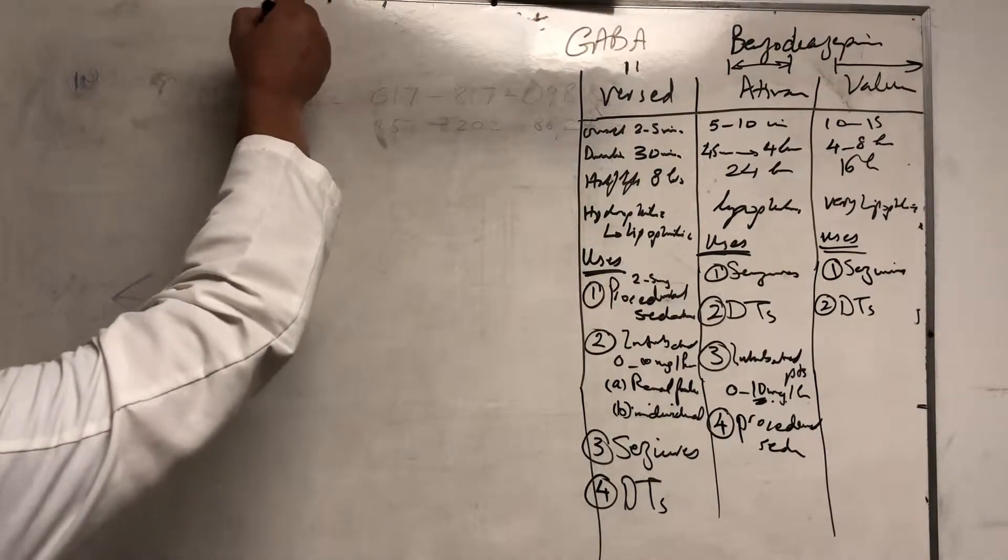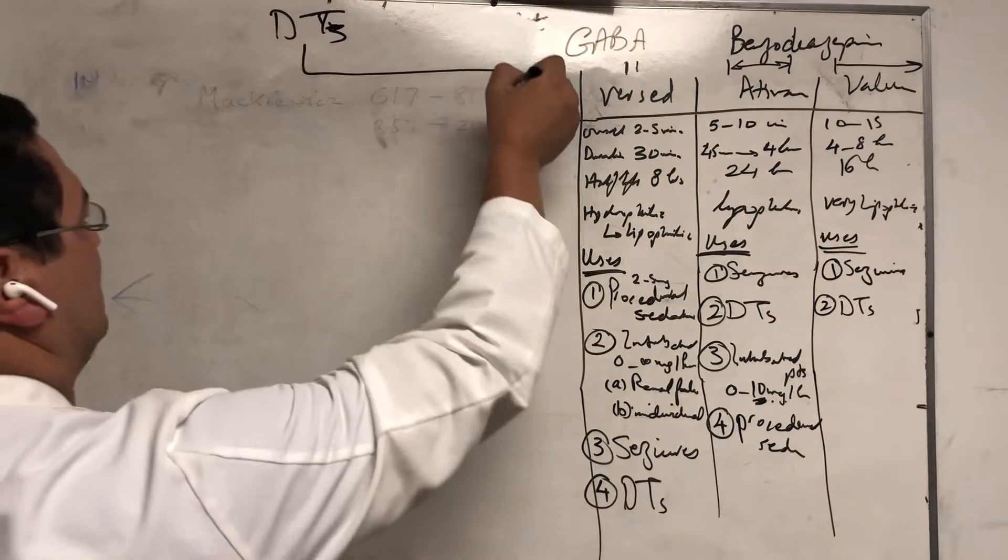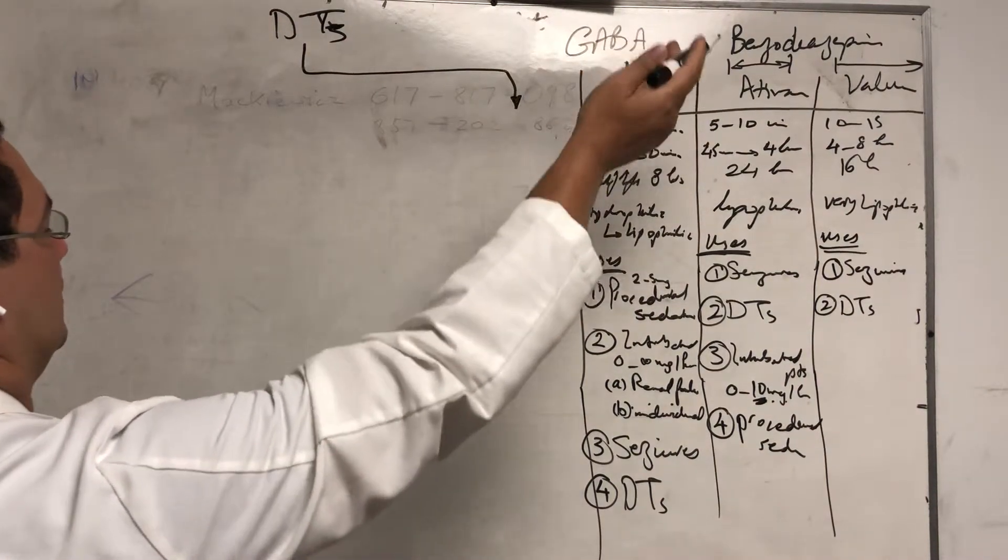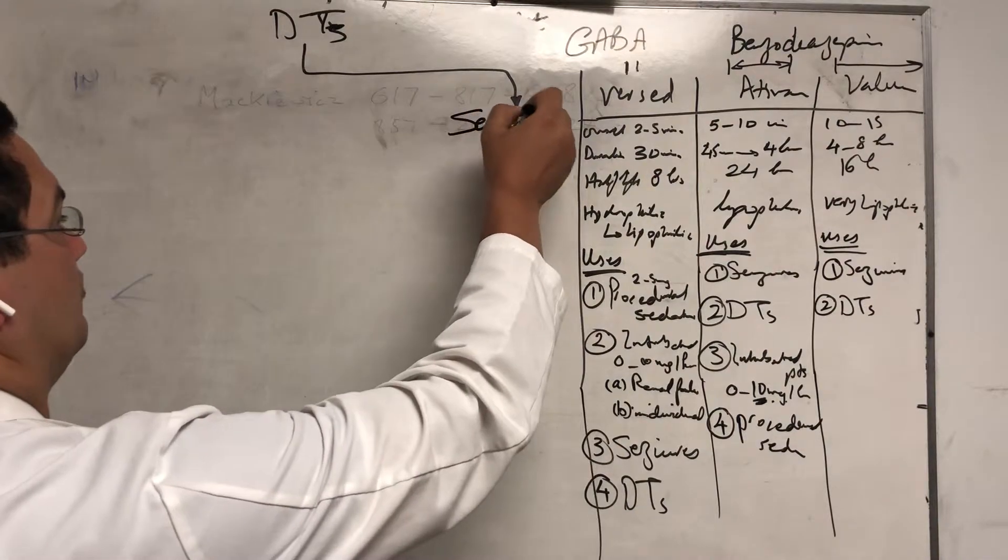For DTs we have a protocol, actually we made it up here but basically based on information and publications from valium and phenobarbital. We divide our DTs into severe DTs and moderate and mild.